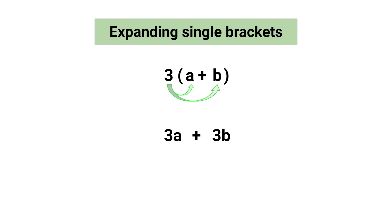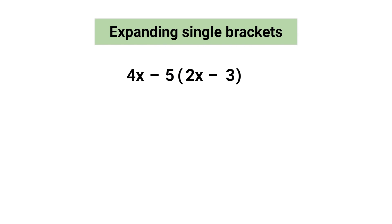This is what it means to expand brackets — it means to remove the brackets by multiplying the terms within by the term outside. We are now left with 3a plus 3b. After removing brackets, the last step is to combine like terms. With addition and subtraction, we can only combine terms that have the same variable and the same exponent. In this case the terms do not share the same variable, so 3a plus 3b is our final answer.